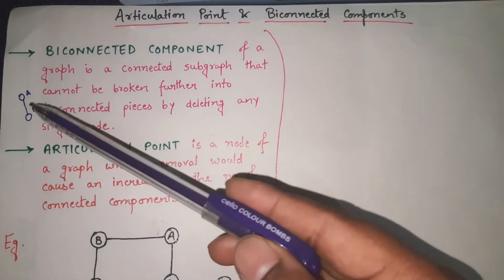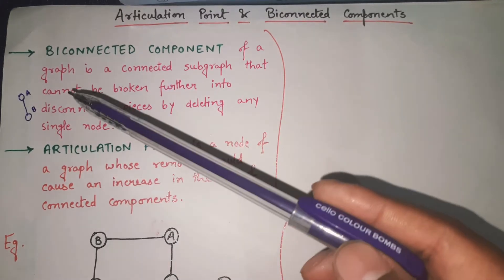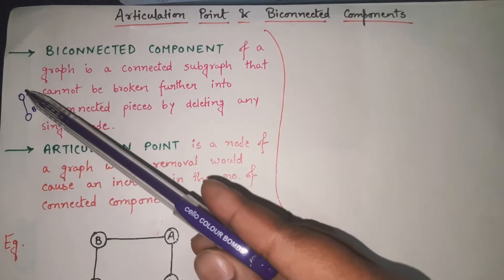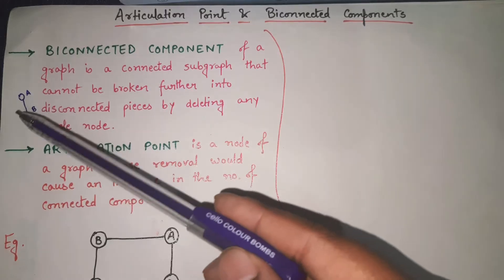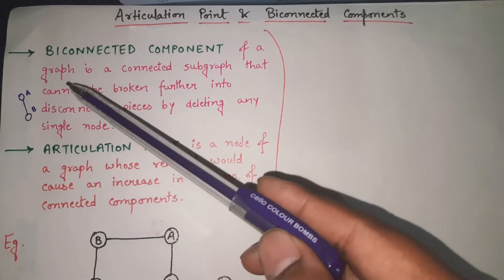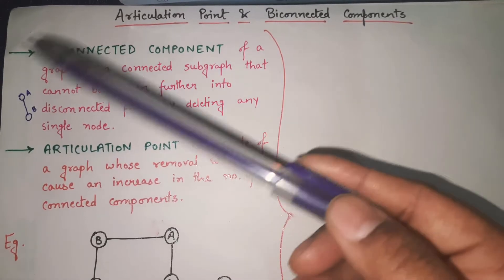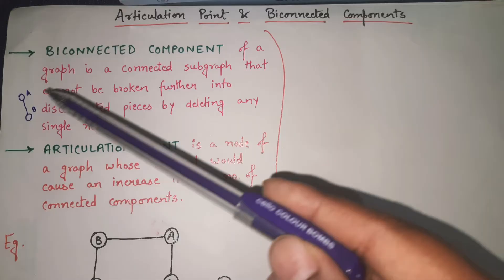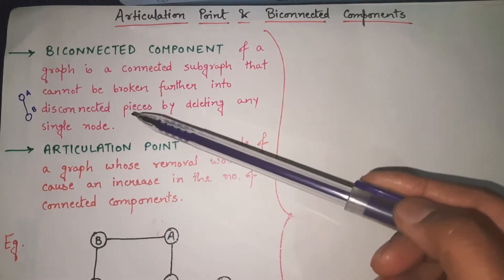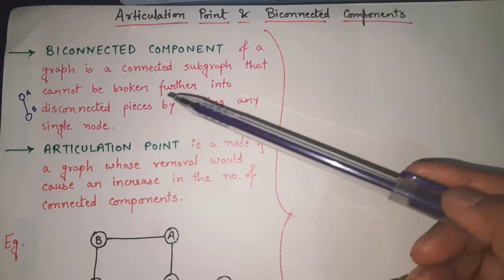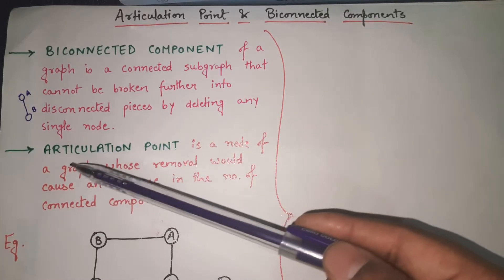I cannot further break down this graph. If I remove node A, only B remains; if I remove B, only A remains. The graph itself cannot be divided further or broken down further. So A-B is the biconnected component.